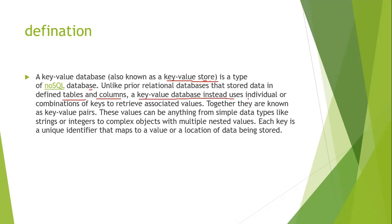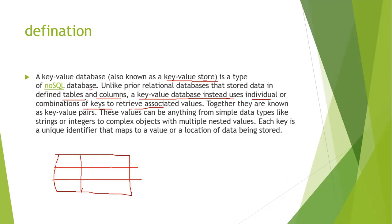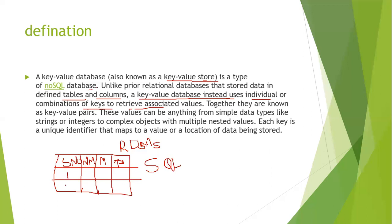Unlike a relational database that stores data in defined tables and columns, a key-value database instead uses individual or combination of keys to retrieve associated values. In a relational database you have a table with rows and columns — for example, student number, name, marks, and phone number. Software used to implement this is called RDBMS — relational database management system.